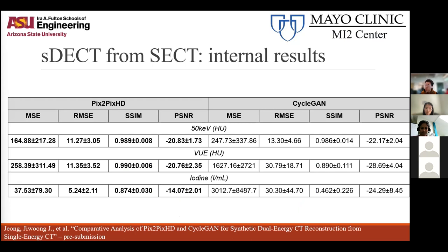Numerically, Pix2Pix HD performs significantly better than CycleGANs on pretty much every metric. We used MSE, RMSE, SSIM, and PSNR to see how well the translation was doing. All models still performed very well, but Pix2Pix overall did way better, with confidence intervals calculated from bootstrapping.